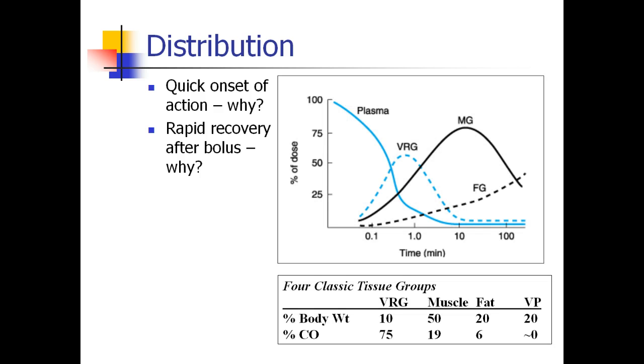This is a famous graph that you will encounter in most anesthesia textbooks in one form or another. Starting with your plasma concentration, 100% of the drug is in your plasma, and as time goes on, the concentration in the plasma drops very rapidly, plummets actually, within the first minute. Where is that drug going? It's going into this first compartment, which we call the vessel-rich group, the VRG. The vessel-rich group consists of our organs that get the most cardiac output. You can see down here that even though they make up a very small percent of your body weight, these organs make up about 75% of your cardiac output. We're talking about the liver and the kidneys, the brain, and perhaps the lungs.